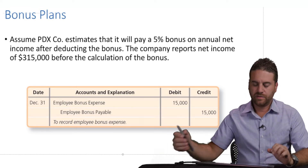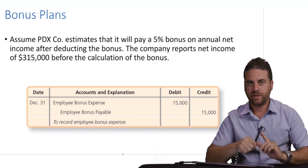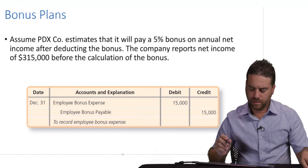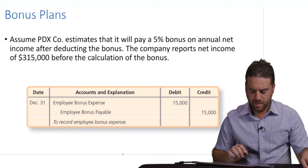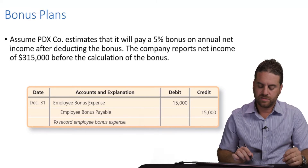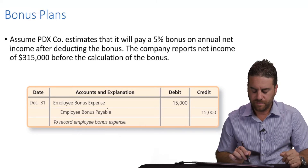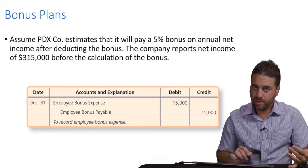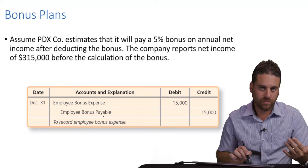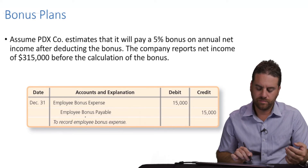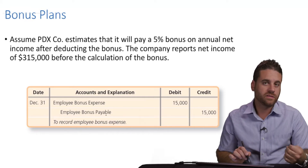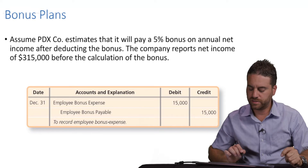So first of all, let's talk about the journal entry first, and then we will talk about how to calculate the amount. The journal entry — obviously we're going to debit an expense account, just like any other expense. It's called employee bonus expense. And the credit — because we're not paying cash in the same year — we will have a payable account, called bonus payable or employee bonus payable. So it's going to be under liabilities in the balance sheet.